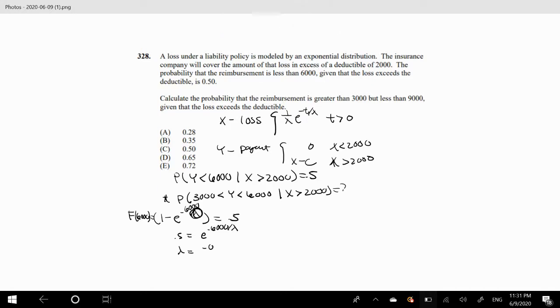So that means 0.5 equals e to the negative $6,000 over lambda. Taking the natural log on both sides, lambda equals negative $6,000 over natural log of 0.5, which ends up being—let me just leave it like this—lambda is approximately equal to 8656.